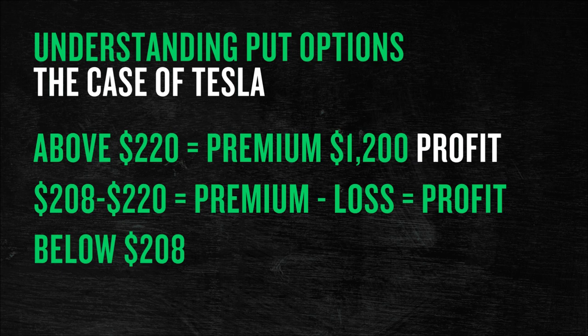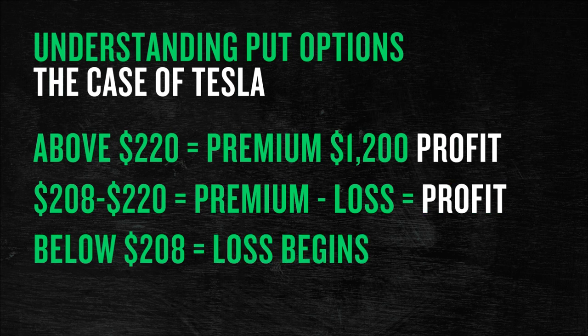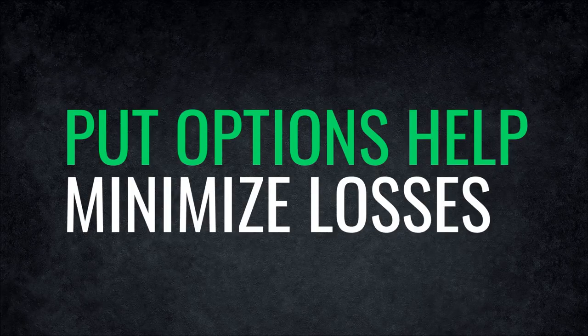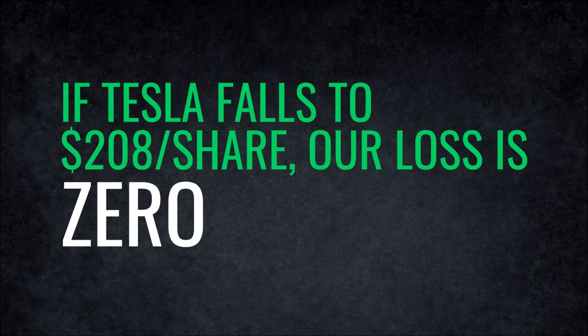Say Tesla sells at $218 at that time — our cost-adjusted premium will be $1,000, since our share price was $220 instead of $218. Number three: if Tesla falls below $208 on the option expiration date, our actual loss will begin, but that will be a minimum loss. At $208, our loss is zero.